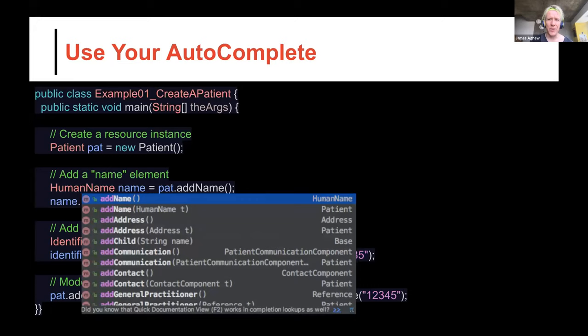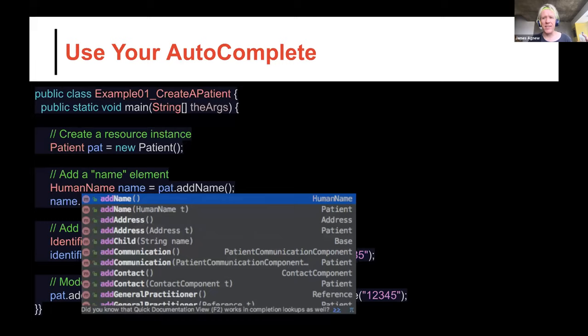The best thing you can do when using HAPI FHIR is get the library into an IDE with the source JARs available, because the intelligent code completion is a really magical part of the HAPI FHIR experience. All of the FHIR documentation has been imported into the JavaDocs of our data models. So if you bring up the patient resource and wonder what the telecom element is about, the JavaDocs will include the same description you'd get on the FHIR spec itself.